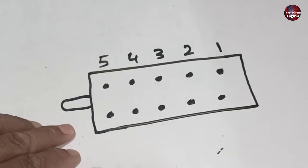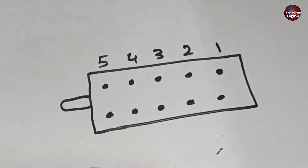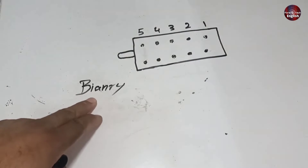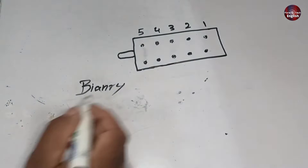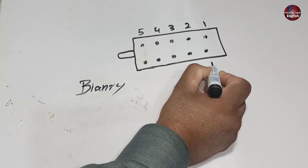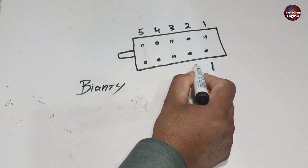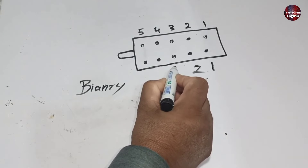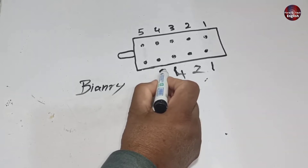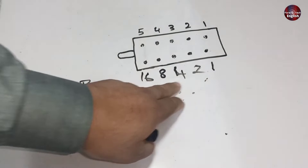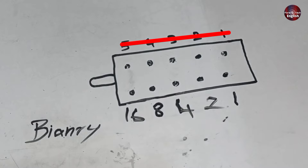I have drawn the connector to show how to make a combination setting for a specific cap number. To do this, we will use a binary system. I will place the binary numbers on the pins starting from pin number 1: the values are 1, 2, 4, 8, 16, and so on — each number doubling the previous. After placing the binary numbers, forget the original pin labels written on top; these binary numbers are what matter for making the combinations.